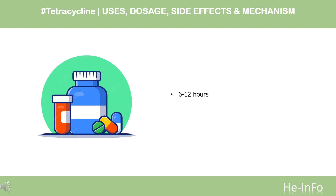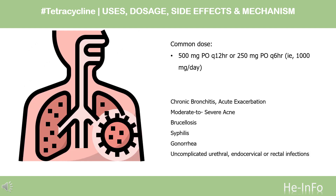Half-life: 6–12 hours. Dose — Chronic bronchitis acute exacerbation: usual daily dose is 500 mg PO every 12 hours, or 250 mg PO every 6 hours (i.e., 1,000 mg per day). Higher doses, for example 500 mg PO every 6 hours, may be required for severe infections or for those infections which do not respond to the smaller doses.